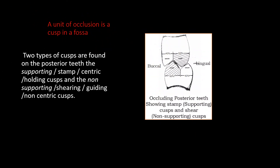Coming down to individual teeth — a unit of occlusion is a cusp-and-fossa. In a tooth there are two types of cusps: the stamped cusps, which are the supporting cusps, and the non-supporting cusps.